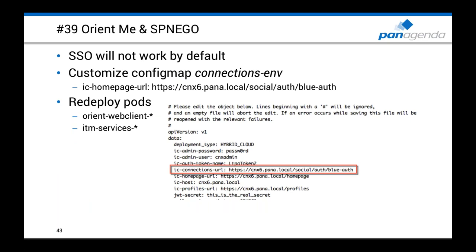Tip 39: OrientMe with SPNEGO single sign-on. This doesn't work by default — you need to change one setting in your Kubernetes configuration. Update your config map and change the IC Connections URL to 'URL/social/auth/blue-authentication.' After that, redeploy all OrientMe web client pods and all important OrientMe bar service pods, and SPNEGO single sign-on will work.